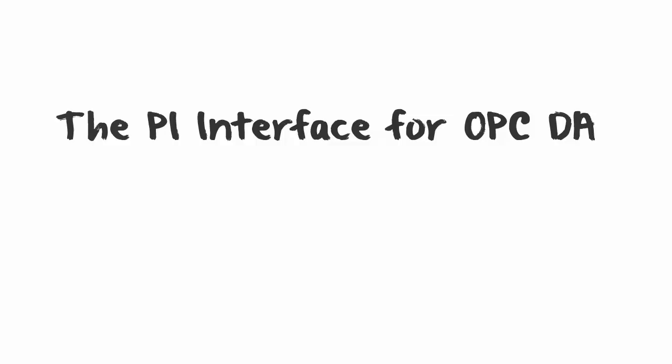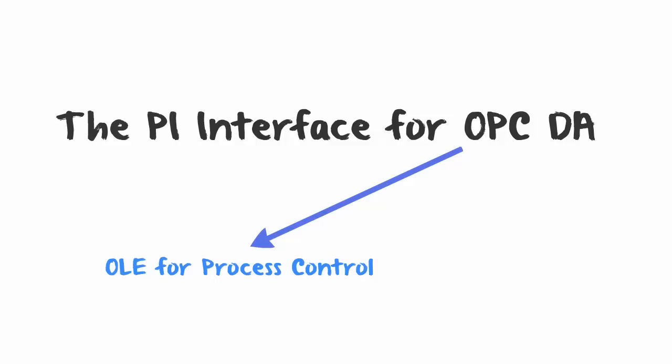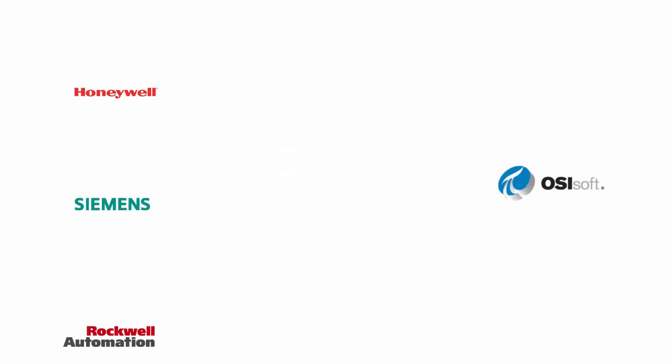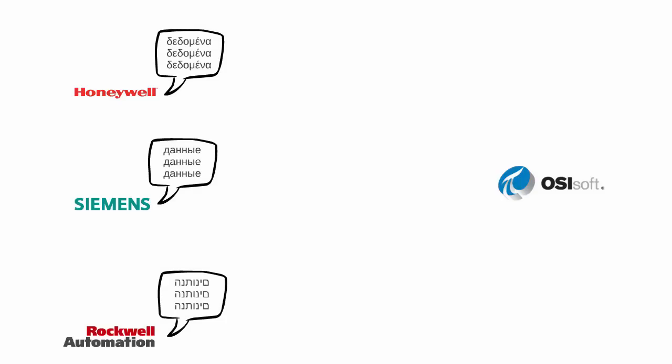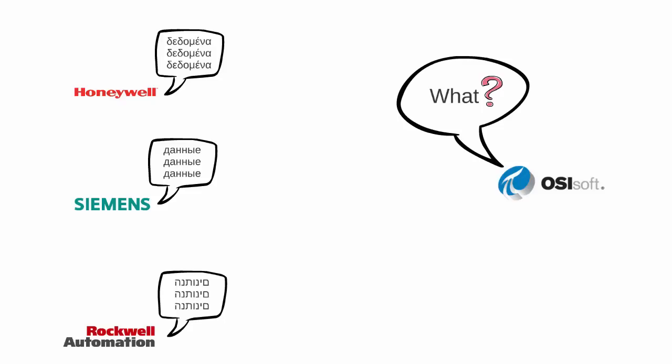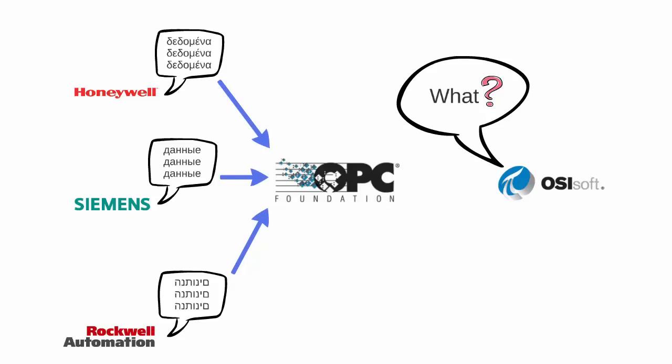The PI Interface for OPC DA is used to collect data from an OPC DA server. In order to understand what an OPC DA server is, we first need to understand what OPC DA means. OPC stands for OLE for Process Control, and DA stands for Data Access. So OPC DA is a standard to communicate data across automation systems. Here we have a bunch of different vendors with different automation systems speaking different languages, and the PI system also speaks its own language, so these languages need to be translated. People in the automation industry came up with the OPC standard as a standard way to expose and collect data on these systems — basically a standard created to facilitate data sharing.